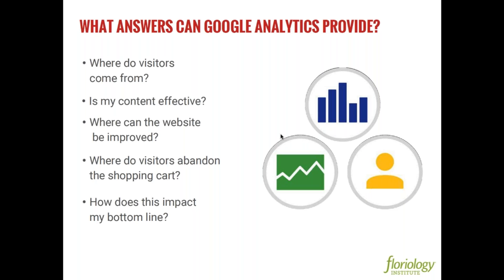Where do visitors abandon the shopping cart? This is a direct reference to conversion on your website — conversion is a really important concept to obsess over. The average conversion rate for most websites is 3%. If you're getting 10,000 visitors a month at a 3% conversion rate and you use Google Analytics to find out where people are abandoning the shopping cart and improve that one area, imagine if you were to just increase your conversion rate by another 3%, literally doubling it from 3% to 6%. Your revenue goes from $10,000 to $20,000 just because double the consumers are now converting on your website.